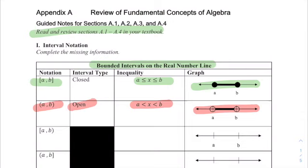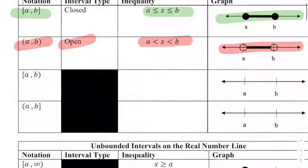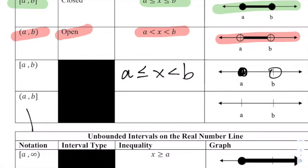Now let's consider some combinations of those. If we have an interval of A to B which includes A, we write that inequality as A is less than or equal to X, which is less than B. B is not included. On the number line, that would be a closed circle for A and an open circle for B, and all the values in between.